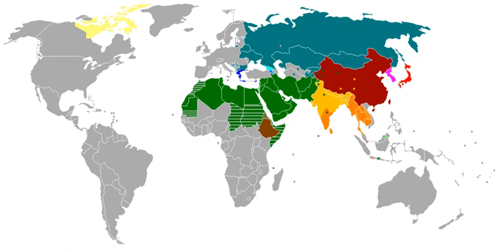Writing systems were preceded by proto-writing, which used pictograms, ideograms, and other mnemonic symbols. Proto-writing lacked the ability to capture and express a full range of thoughts and ideas. The invention of writing systems, which dates back to the beginning of the Bronze Age in the late Neolithic era of the late fourth millennium BC, enabled the accurate durable recording of human history in a manner not prone to the same types of error to which oral history is vulnerable. Soon after, writing provided a reliable form of long-distance communication, and with the advent of publishing, it provided the medium for an early form of mass communication.